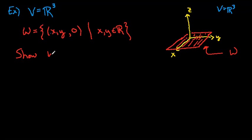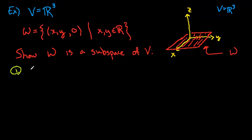We want to show that W is a subspace of V. The first thing to check is that W is a subset of R³. This is certainly true, because every vector in W has exactly three components — an x, a y, and a zero — so it lives in R³.